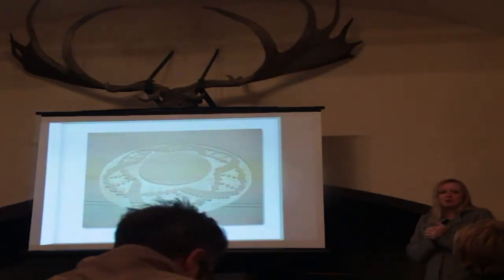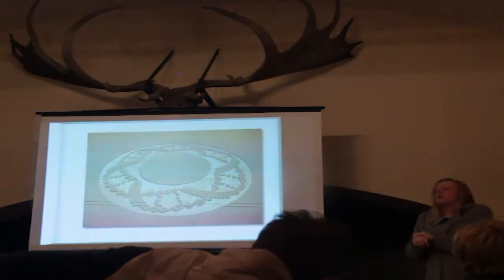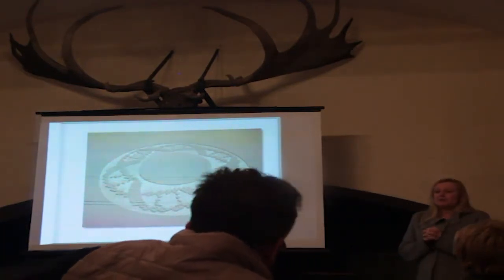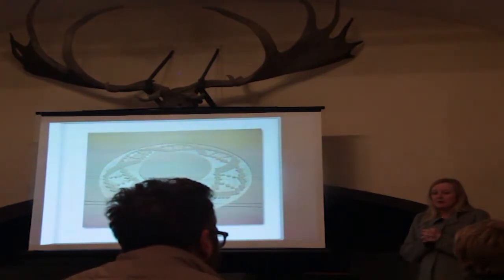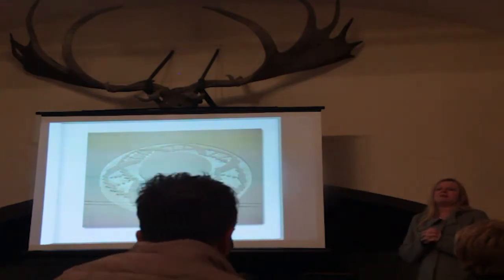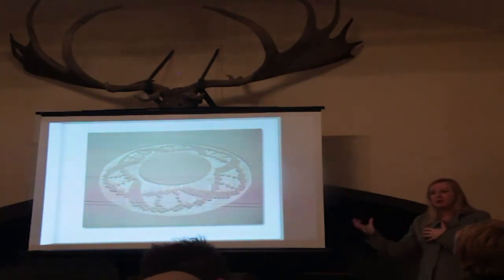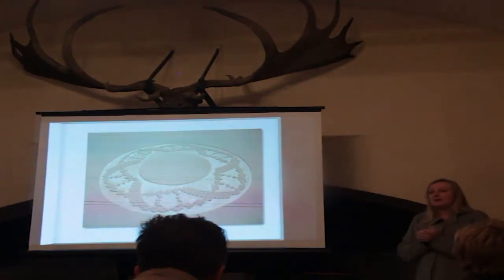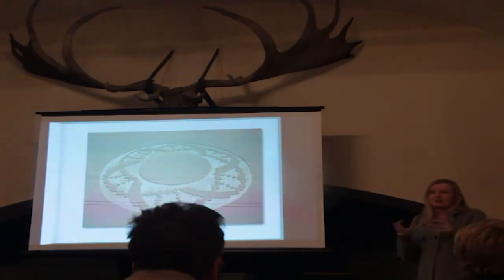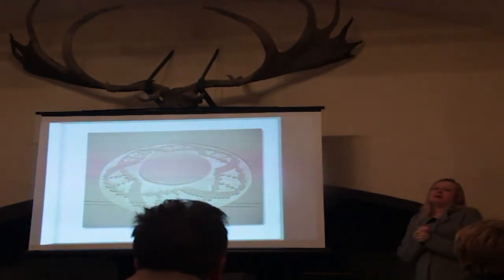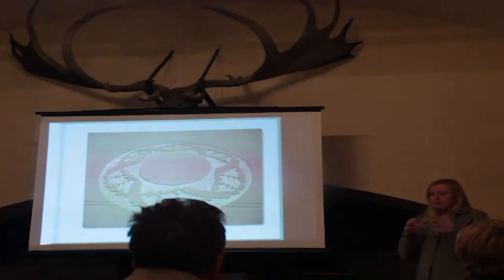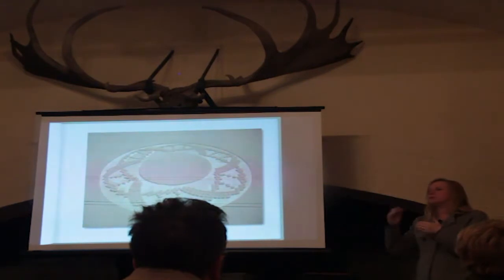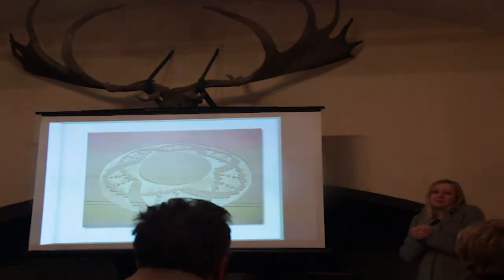If you want to read more about that, read R.A. Schwaller de Lubicz. He was a really original thinker who spent a lot of time in the early 1900s in Egypt surveying many of the temples, analysing the geometry and numbers involved. He took it back to recreate the thinking behind it. His big tome is called The Temple of Man, and it's based on the temple at Luxor, which he believed encoded everything the Egyptians knew about man himself and his connection to the cosmos. It's absolutely stunning work — iconic.